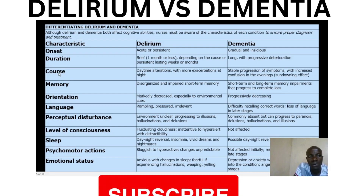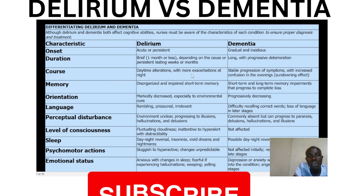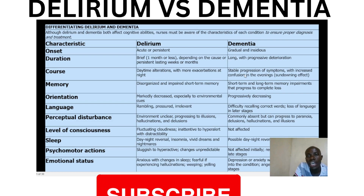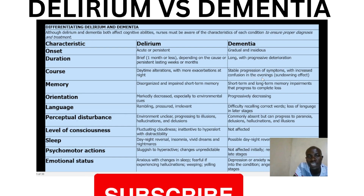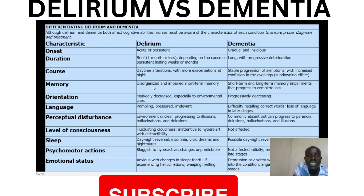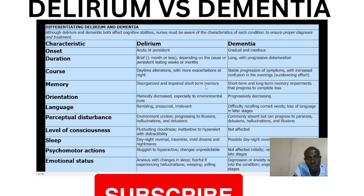In terms of the course, with delirium we have daytime alterations with more exacerbations at night. For dementia, we have stable progression of symptoms with increased confusion in the evenings — we normally call it the sundown effect. In terms of memory, delirium presents with disorganized and impaired short-term memory, whereas in dementia we see short-term and long-term memory impairments that progress to complete loss.